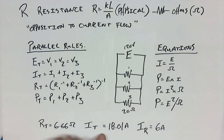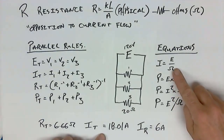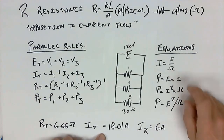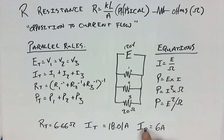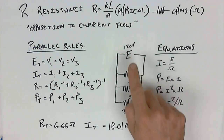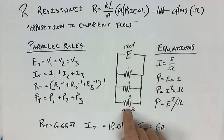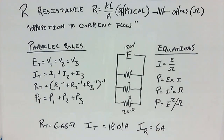The I total is calculated using Ohm's law: I is equal to E over ohm — using the total voltage and total ohms. And the current through one resistor: 120 volts divided by 20 ohms gives individual current values of 6 amps.